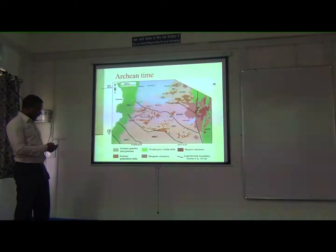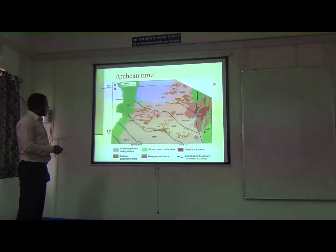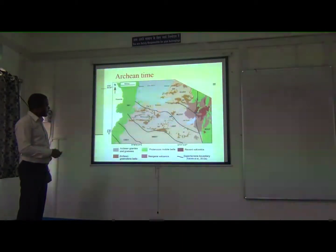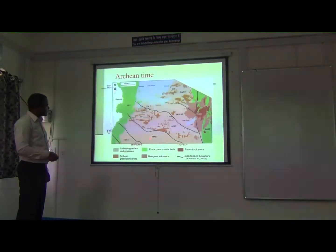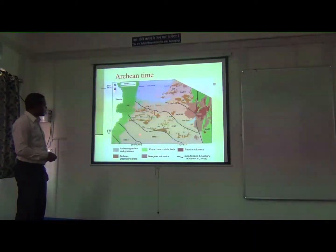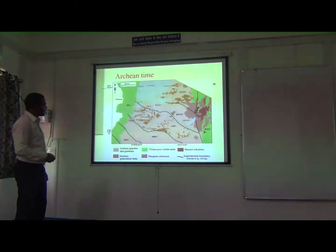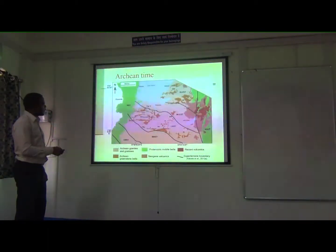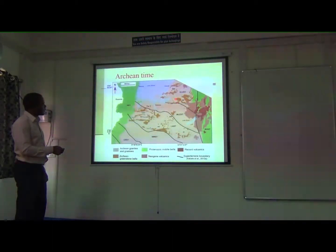Starting with the Archean time, we have the craton, and here these are the greenstone belts, which represent the low-grade metamorphic terrain. And this is the basement rocks where we have the high-grade metamorphic rocks as well as the intrusions. This greenstone belt has been separated by intrusive rocks, and you can see they are trending in this direction. Also, this is the late Archean time, where we have the Musoma group, which is called the Kavirondian supergroups.